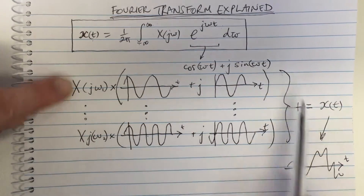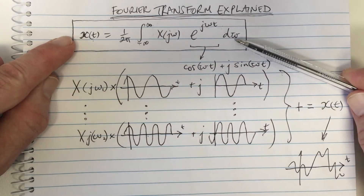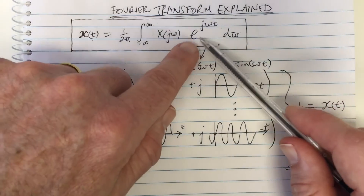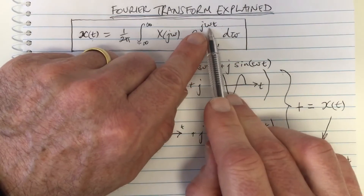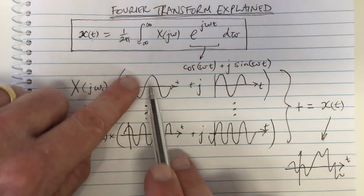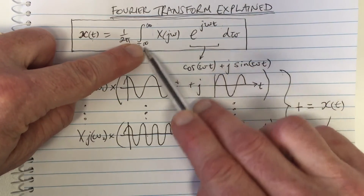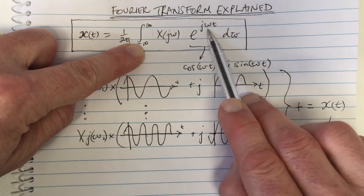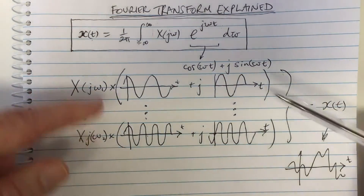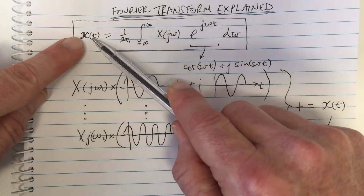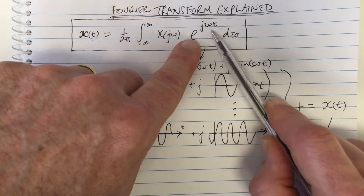So once again, to reiterate: when I see this equation, I think about complex waveforms, each at their own value of ω. We have them all at different values of ω, we add them all up from ω equals minus infinity to infinity. This is the way to think of a Fourier transform — our time domain signals are made up of weighted amounts of each of these different basis functions.